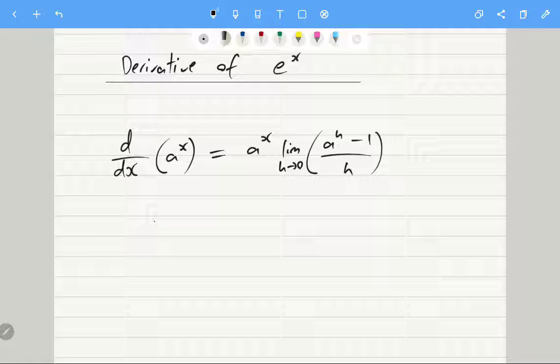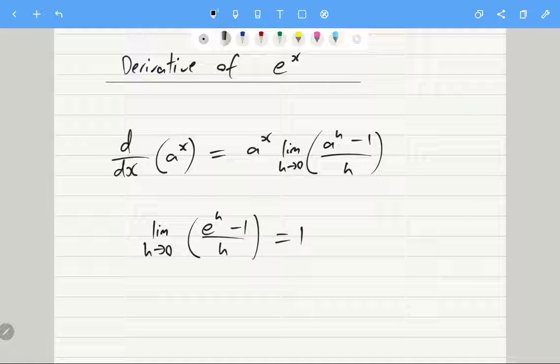Therefore we can say with certainty, and one of the definitions of e, is that the limit as e to the h minus 1 over h is equal to 1. It is the only constant in which this will equal 1.